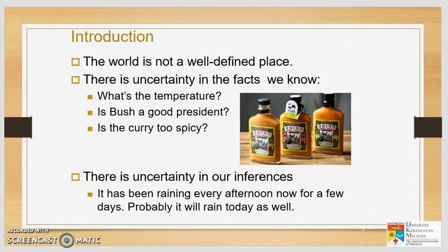What is uncertainty? Uncertainty is something that is not well defined, because the world is full of uncertainty. If I say that today is cold, maybe for me it's cold but for you it's not cold. So how do we represent this? We use temperature — we try to quantify it, for example 32 degrees or 28 degrees Celsius.